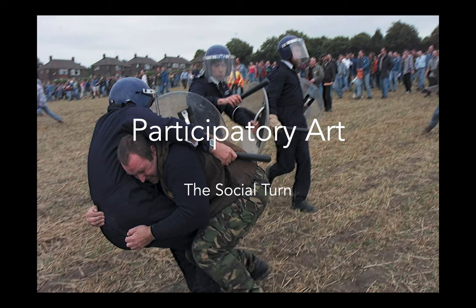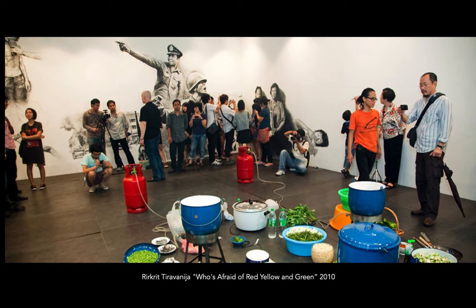Let's look at a few examples by way of introduction. Here's Rirkrit Tiravanija, a Thai artist well known and associated with this type of work. Here you have people in a gallery enjoying a Thai curry that the artist has made — in the gallery. They're talking, and if you saw this without knowing it was art, you would say this looks like a fun get-together or a party, with people drawing on walls and so forth.